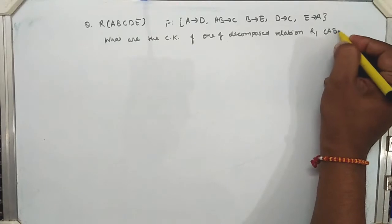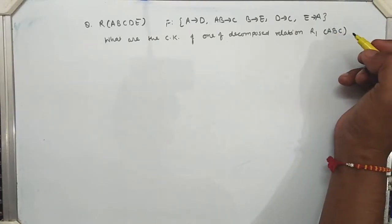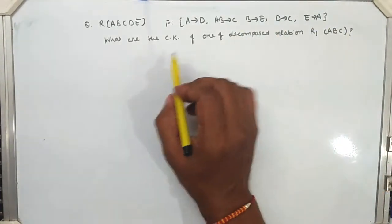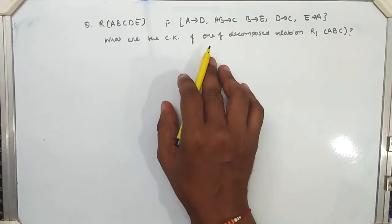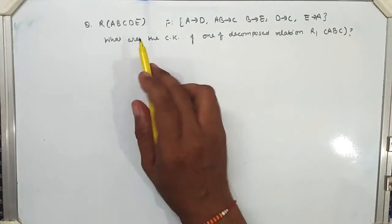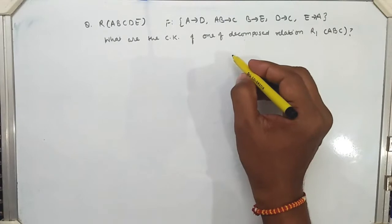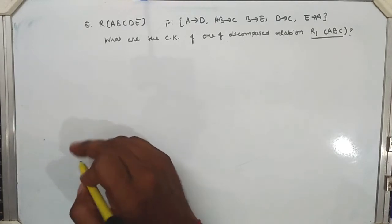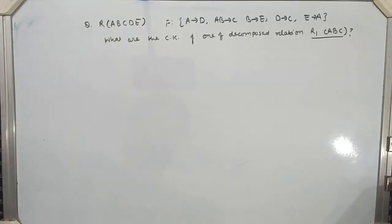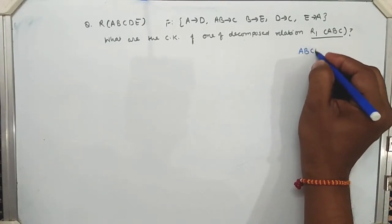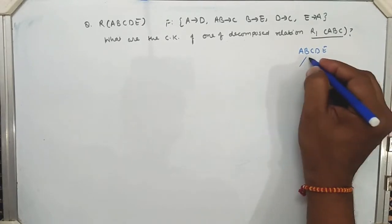The decomposed relation R1 has attributes A, B, C. The question being asked is about decomposition — if we divide this relation into two parts, what would be the candidate key for one of the parts? So how do we solve this type of question? We can infer that A, B, C, D, E is divided into various parts and one of the parts is R1.